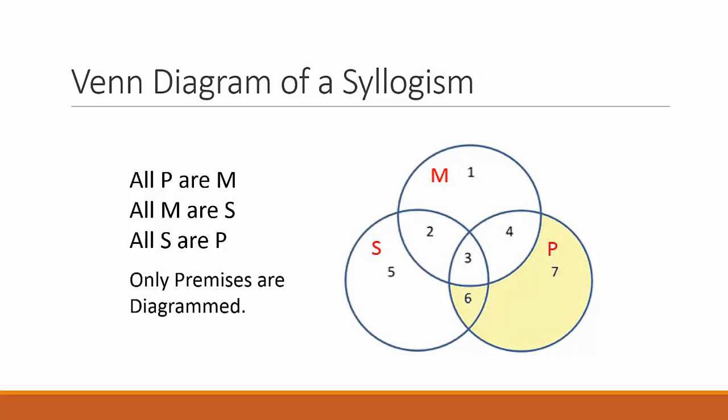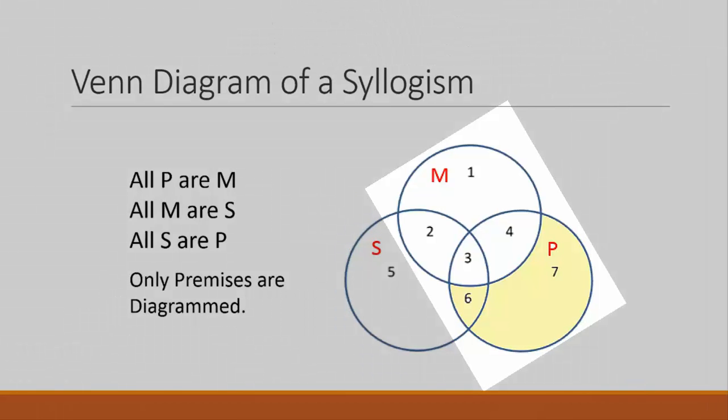Here is the Venn diagram of the first premise: all P are M. Areas 6 and 7 are shaded to indicate nothing is there. The only P's are the ones in areas 3 and 4, the areas that are also part of the M category, so areas 3 and 4 are not shaded.